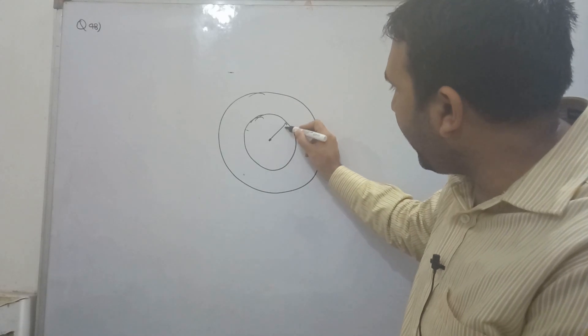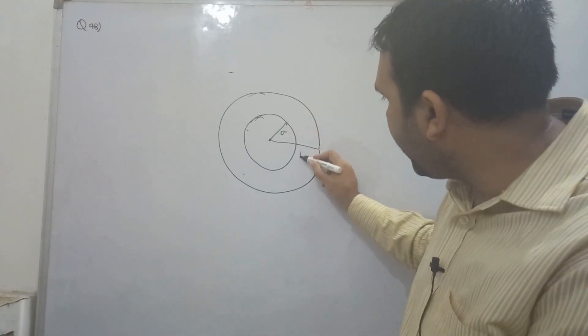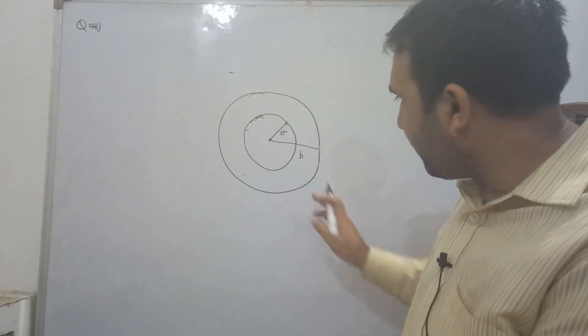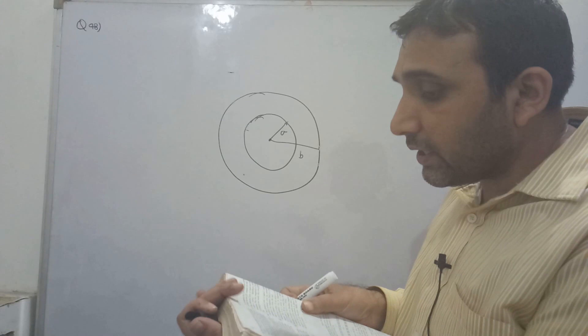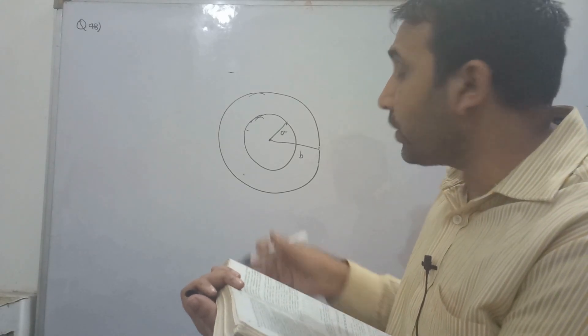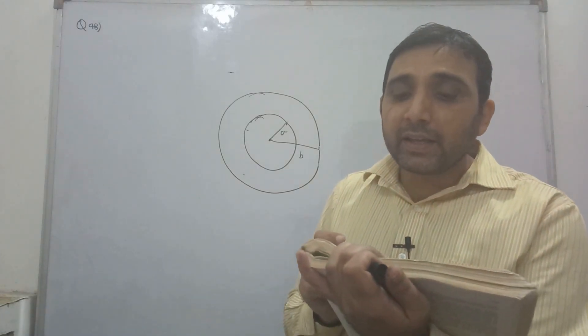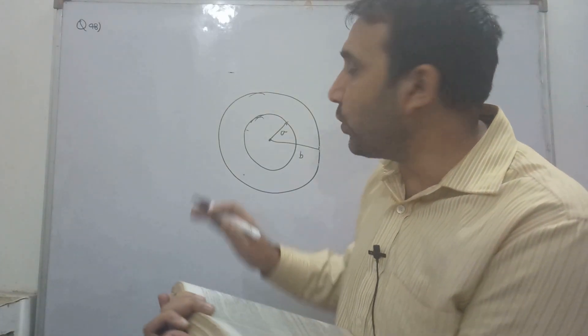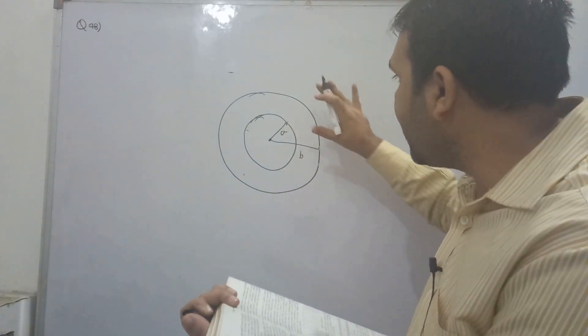So this is hollow, inner radius is a and outer radius is b here, guys. Now let me see what I am saying. Inner radius is a and outer radius is b, correct. And it's carrying a current i distributed uniformly over this cross section.